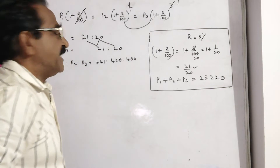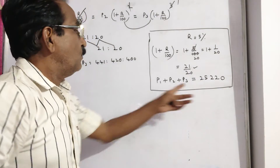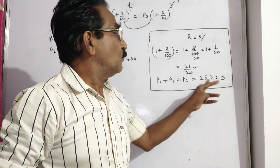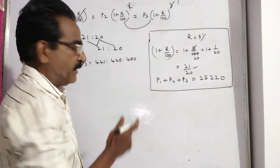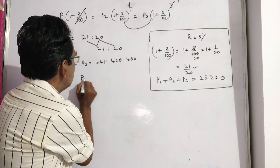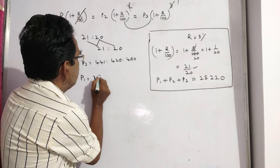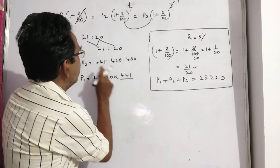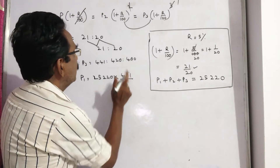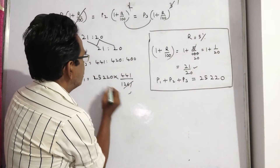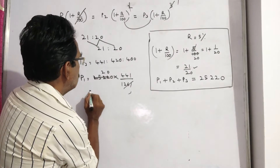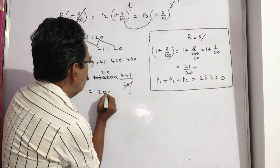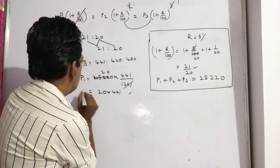So P1 is equal to 25,220 into 441 divided by — adding these three gives 1261. So P1 is equal to 20 into 441 divided by 1261.